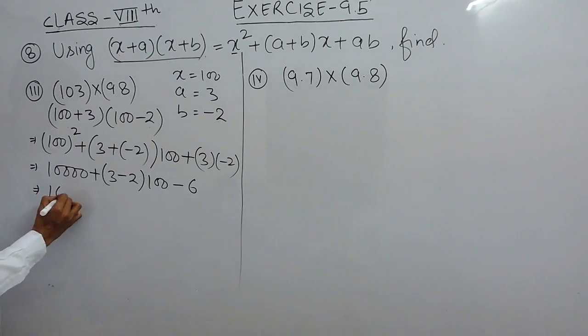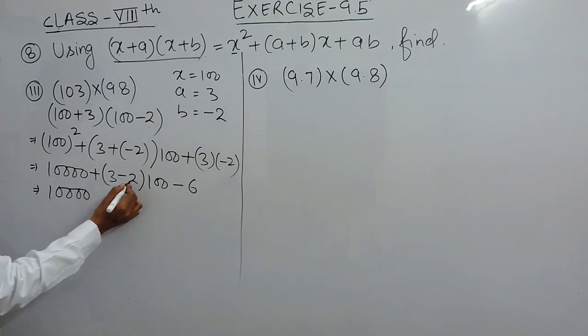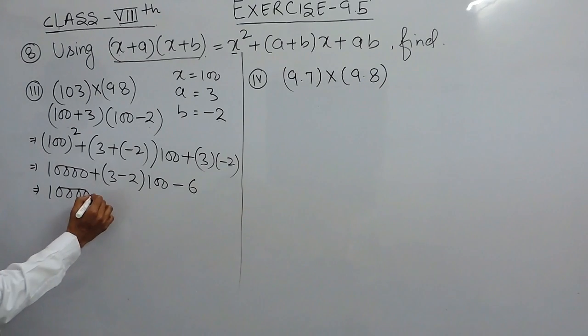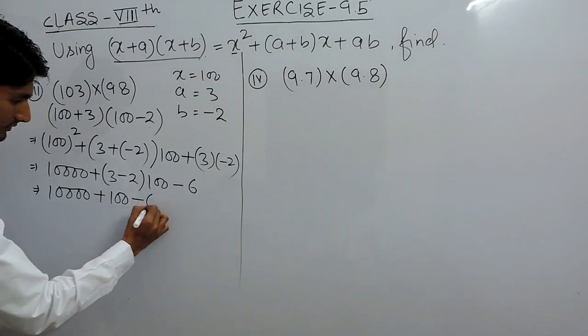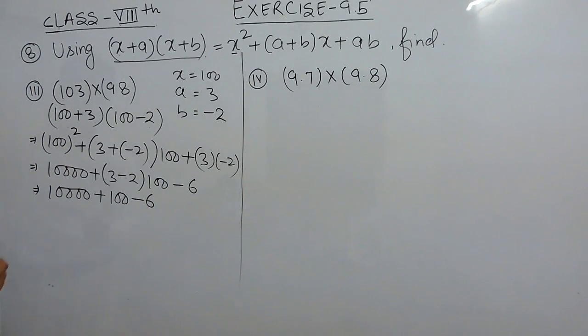Further solving this, 3 minus 2 is 1, so this will become 100 and this will become minus 6. Solving this, these numbers can be added: this will become 10,010 and this will be minus 6.